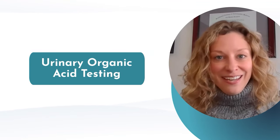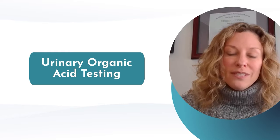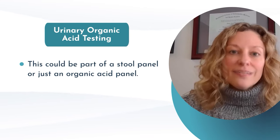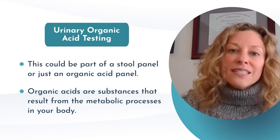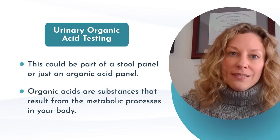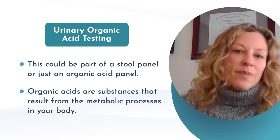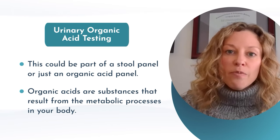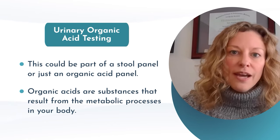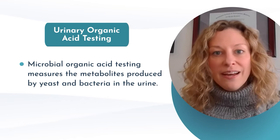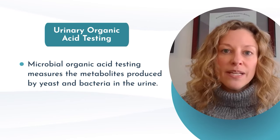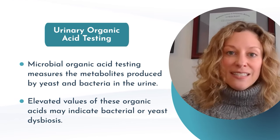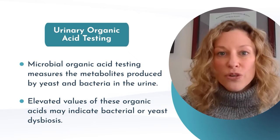Urinary organic acid testing is also really valuable to assess for dysbiosis. Organic acids are substances that result from metabolic processes in your body. We can measure them in the urine, and analyzing these metabolites from different metabolic pathways provides insight into areas related to gut health. Microbial organic acid testing measures the metabolites produced by yeast and bacteria in the urine, and elevated values of these organic acids may indicate bacterial or yeast dysbiosis.